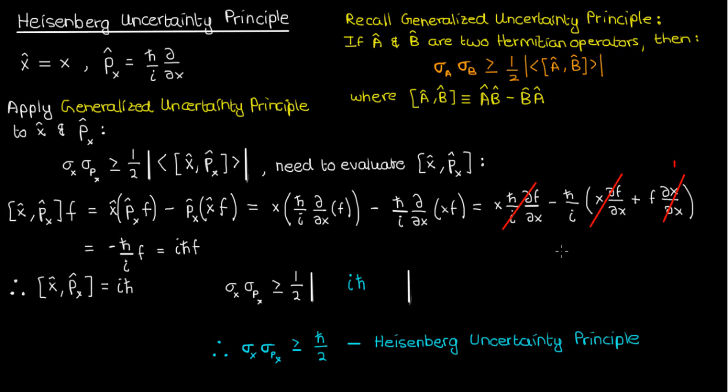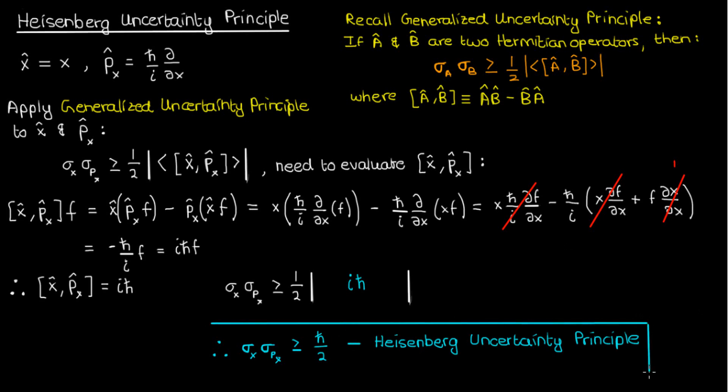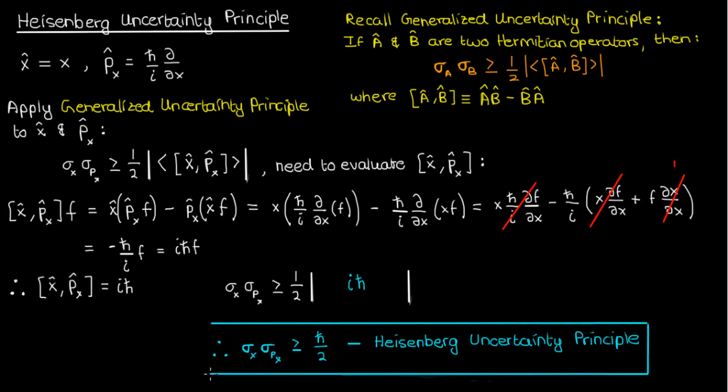This is the Heisenberg uncertainty principle: there is always a trade-off between the precision on your position and the precision on your momentum. A particle with a precisely defined position must necessarily have an imprecisely defined momentum, and a particle with a precisely defined momentum must necessarily have an imprecisely defined position.